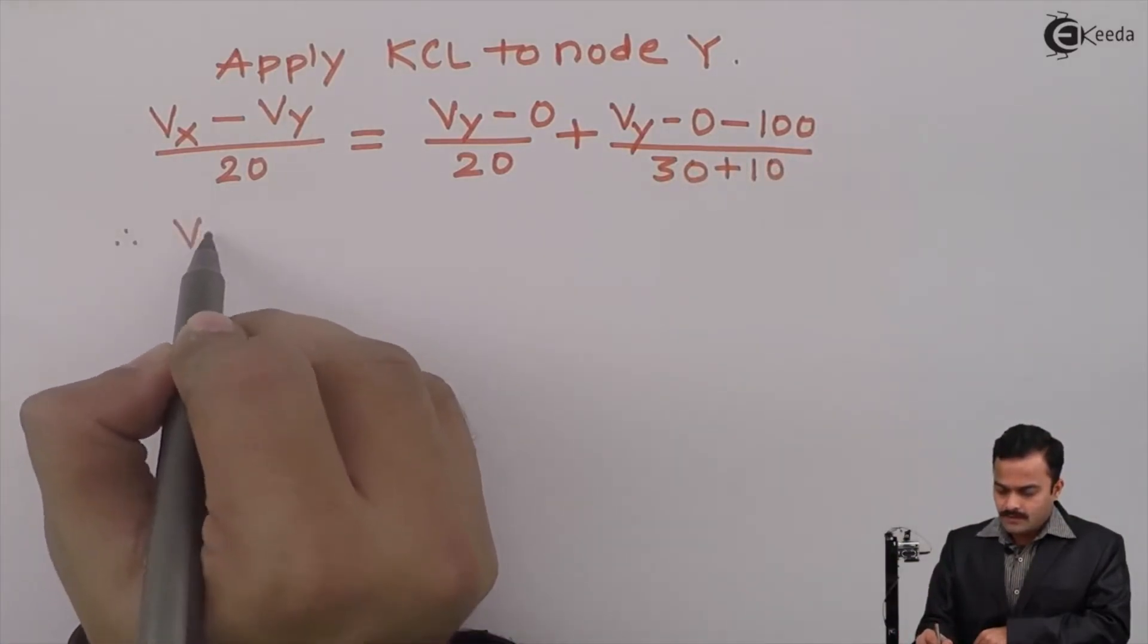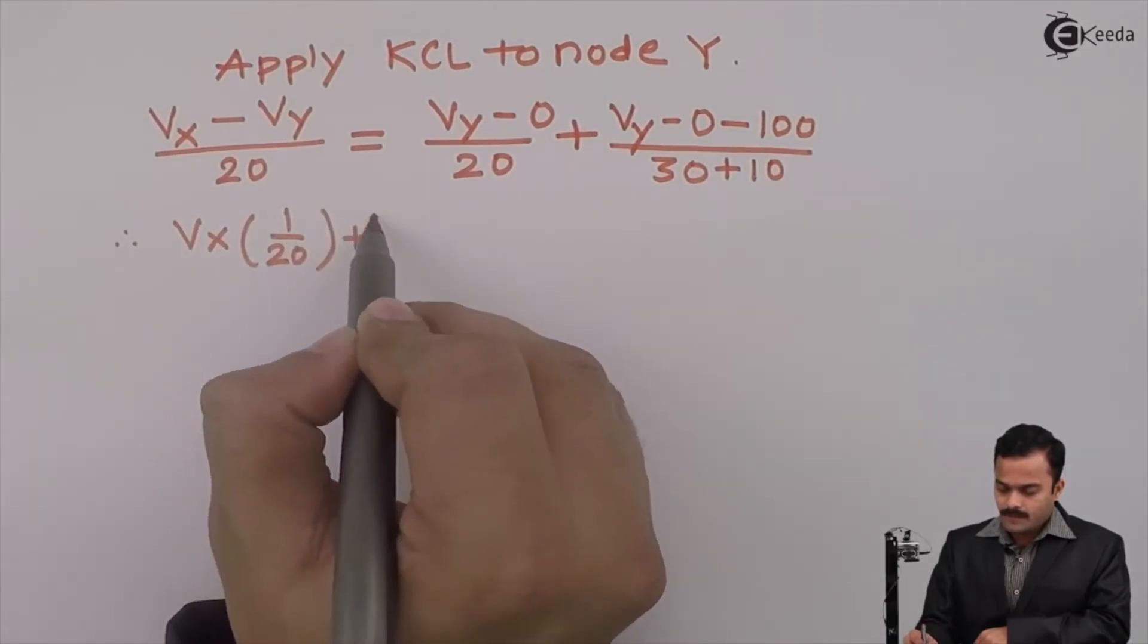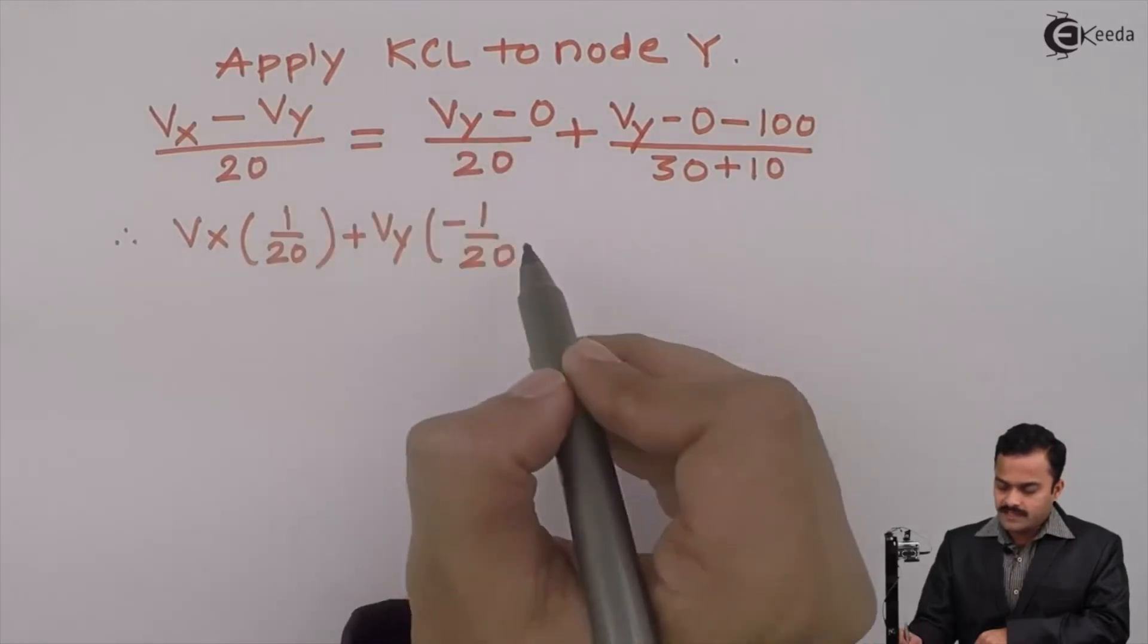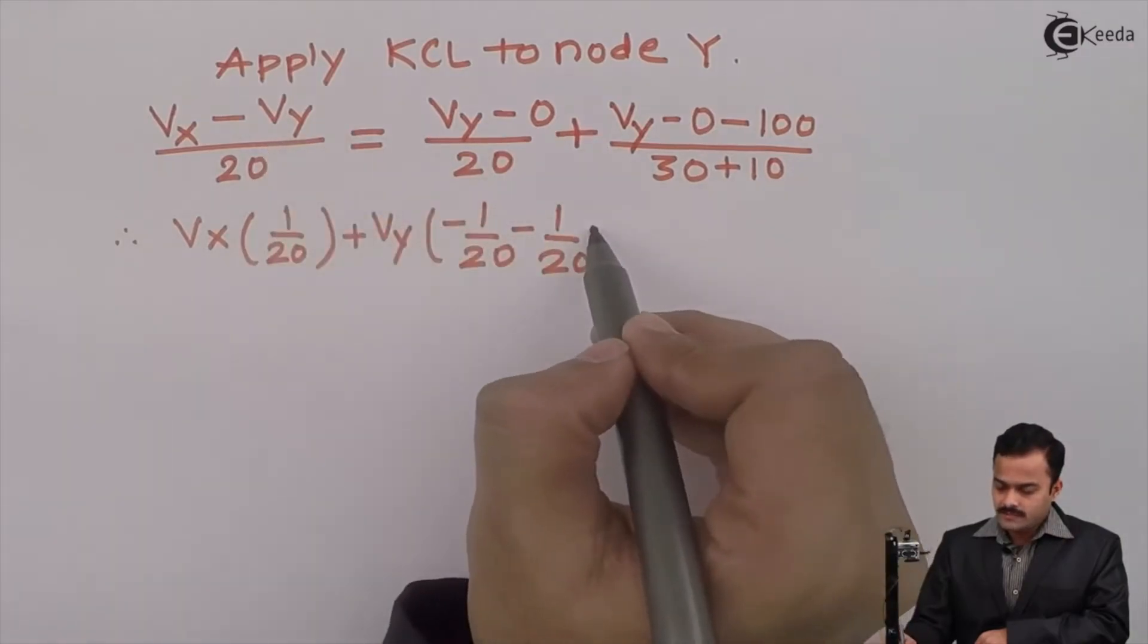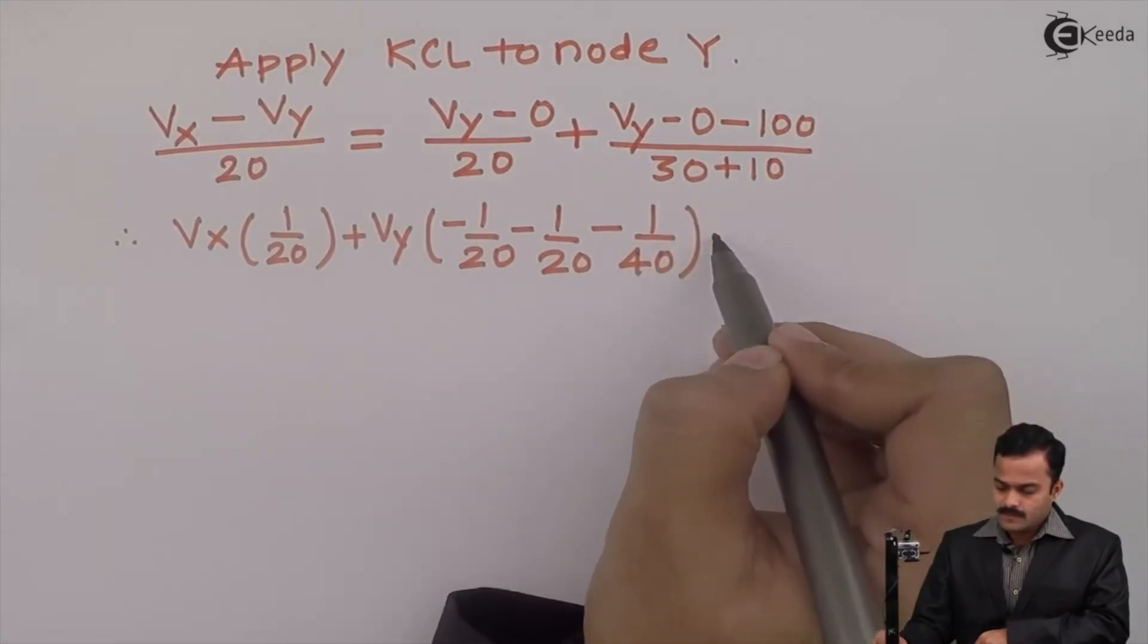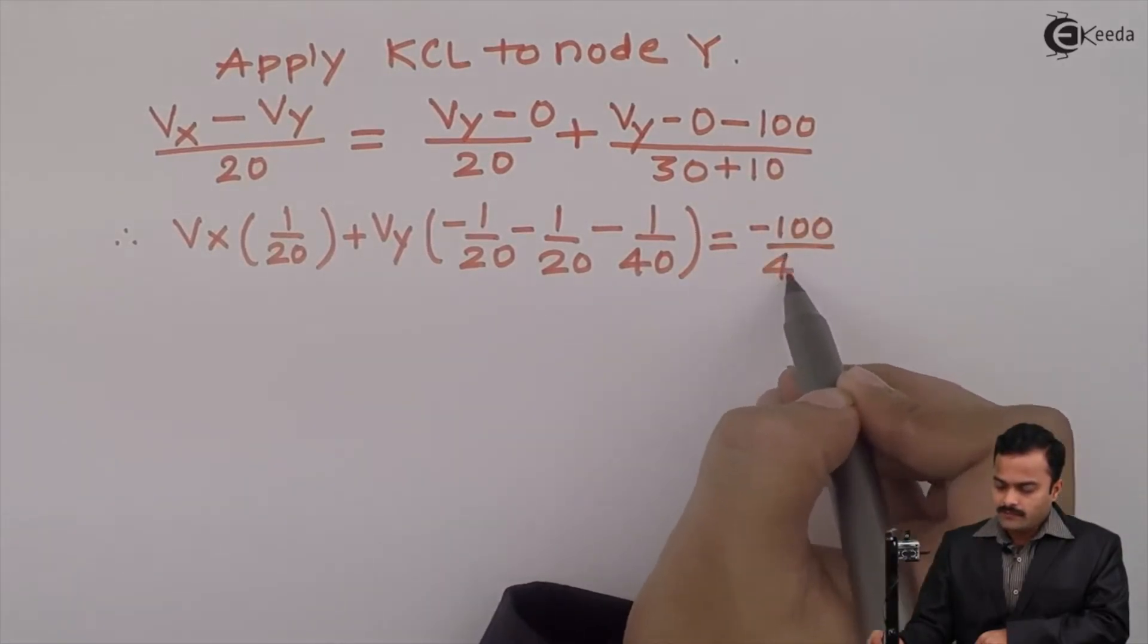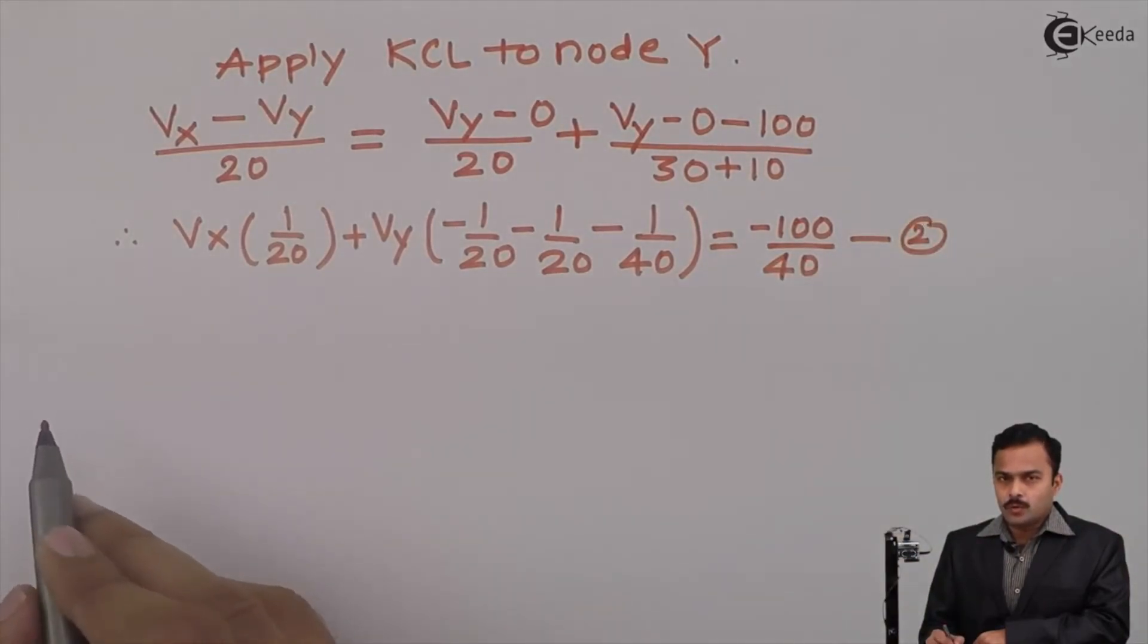So let's simplify. Vx 1 by 20 plus Vy minus 1 by 20, this term will go this side minus 1 by 20, this term will also go this side minus 1 by 40, equal to the constant minus 100 divided by 40. Equation number 2.